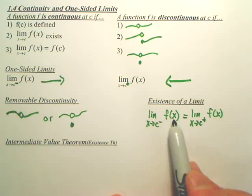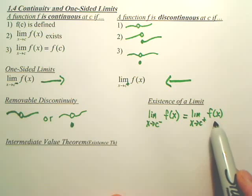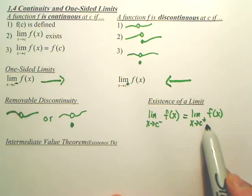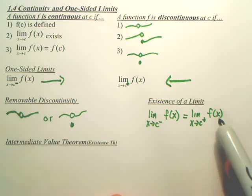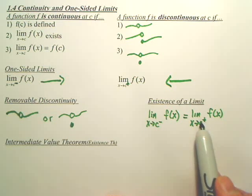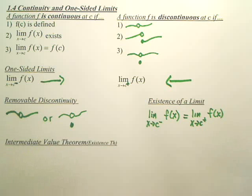A limit exists if the left and right side both agree and are equal. The book says it that this equals L and this equals L. I think that's stupid. Why don't you just say they're equal? So, this is the definition of the existence of a limit. They emerge and hit the same spot.